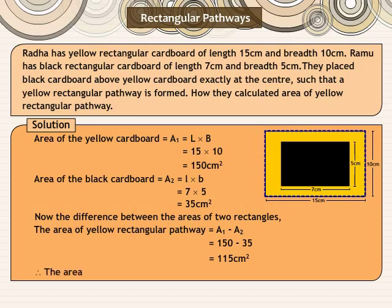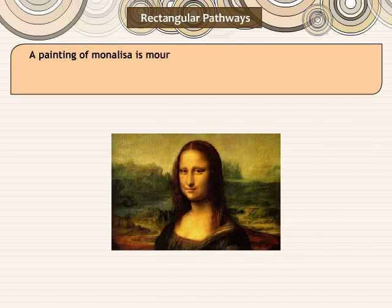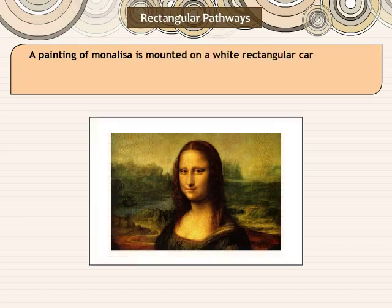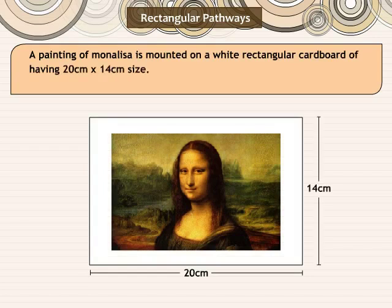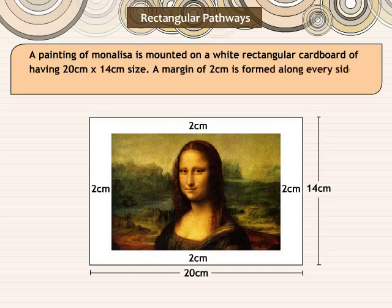Therefore, the area of yellow rectangular pathway is 115 cm square. A painting of Mona Lisa is mounted on a white rectangular cardboard of 20 cm by 14 cm size. A margin of 2 cm is formed along every side. Find the total area of margin on the cardboard.